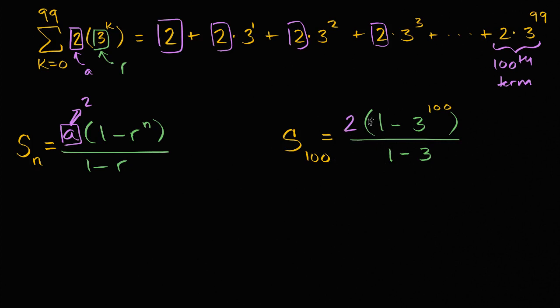And we could simplify this. At this point, it is arithmetic that you'd be dealing with. But down here, you would have a negative two. And so you'd have two divided by negative two. So that is just a negative. And so negative of one minus three to the hundredth, that's the same thing. This is equal to three to the hundredth power minus one. And we're done.